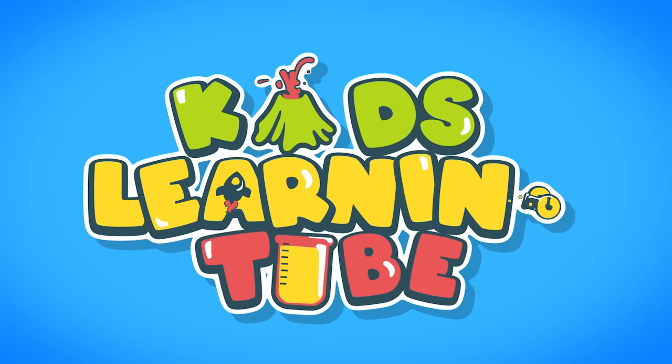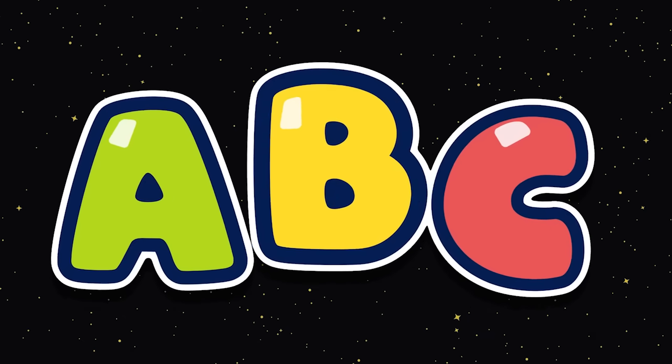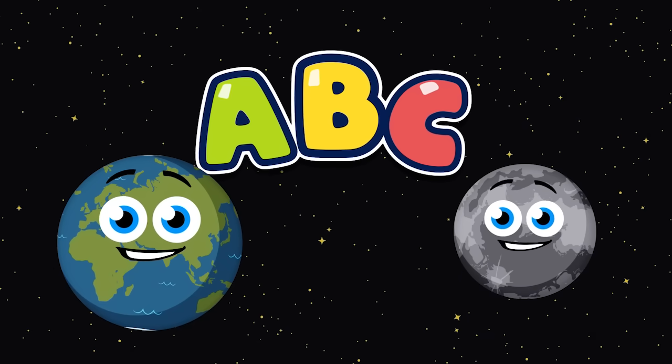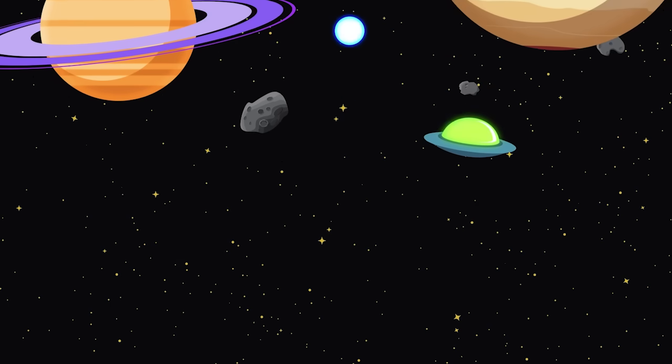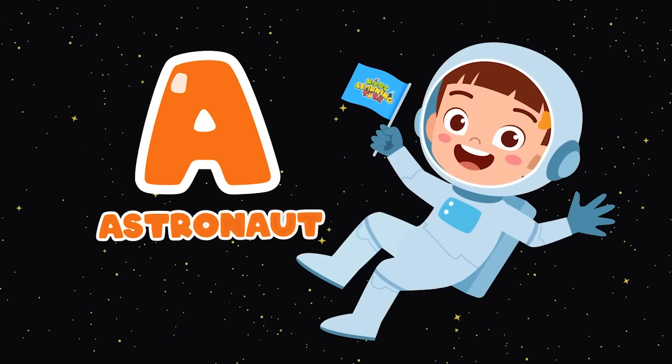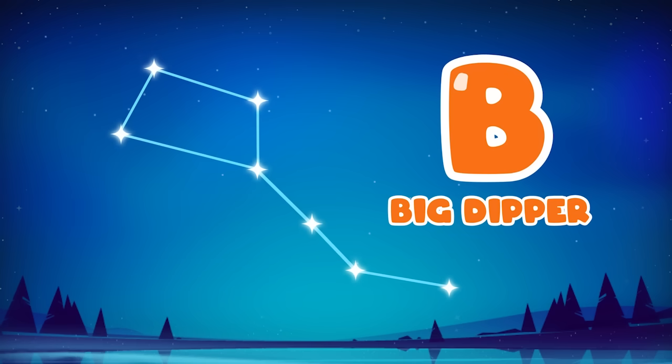Kids learn it too! These are the ABCs of space for you and me. Let's learn these space objects while we sing into D! A is for Astronaut, B is for Big Dipper.